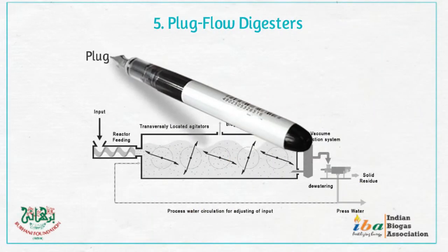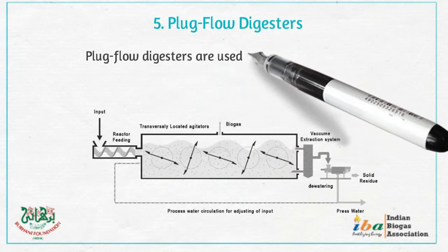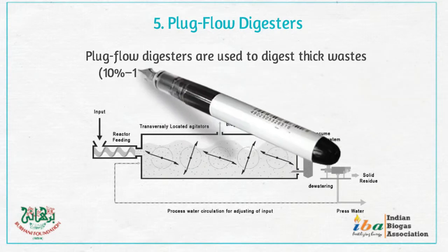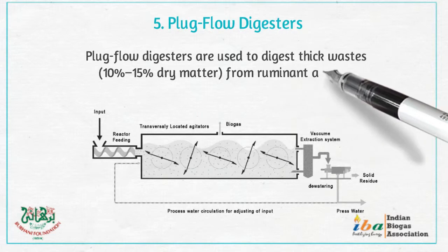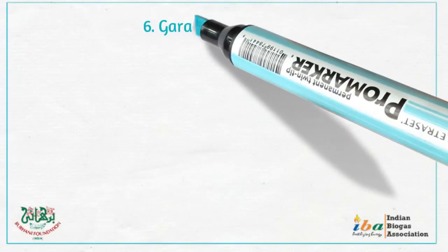5. Plug Flow Digesters. Plug flow digesters are used to digest thick waste — 10% to 15% dry matter — from ruminant animals.